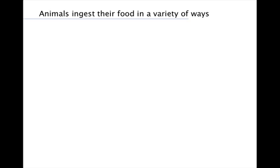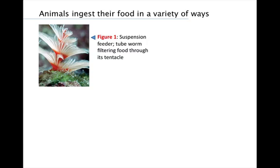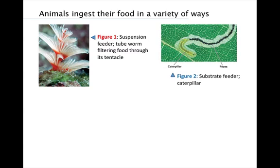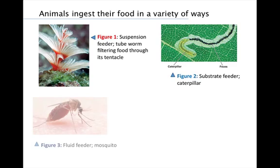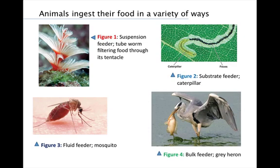There are a variety of ways that animals ingest their food. Suspension feeders extract food particles suspended in the surrounding water. Substrate feeders live in or on their food source and eat their way out of it. Fluid feeders obtain food by sucking nutrient-rich fluids from a living host, either a plant or an animal. And lastly, bulk feeders ingest large pieces of food.